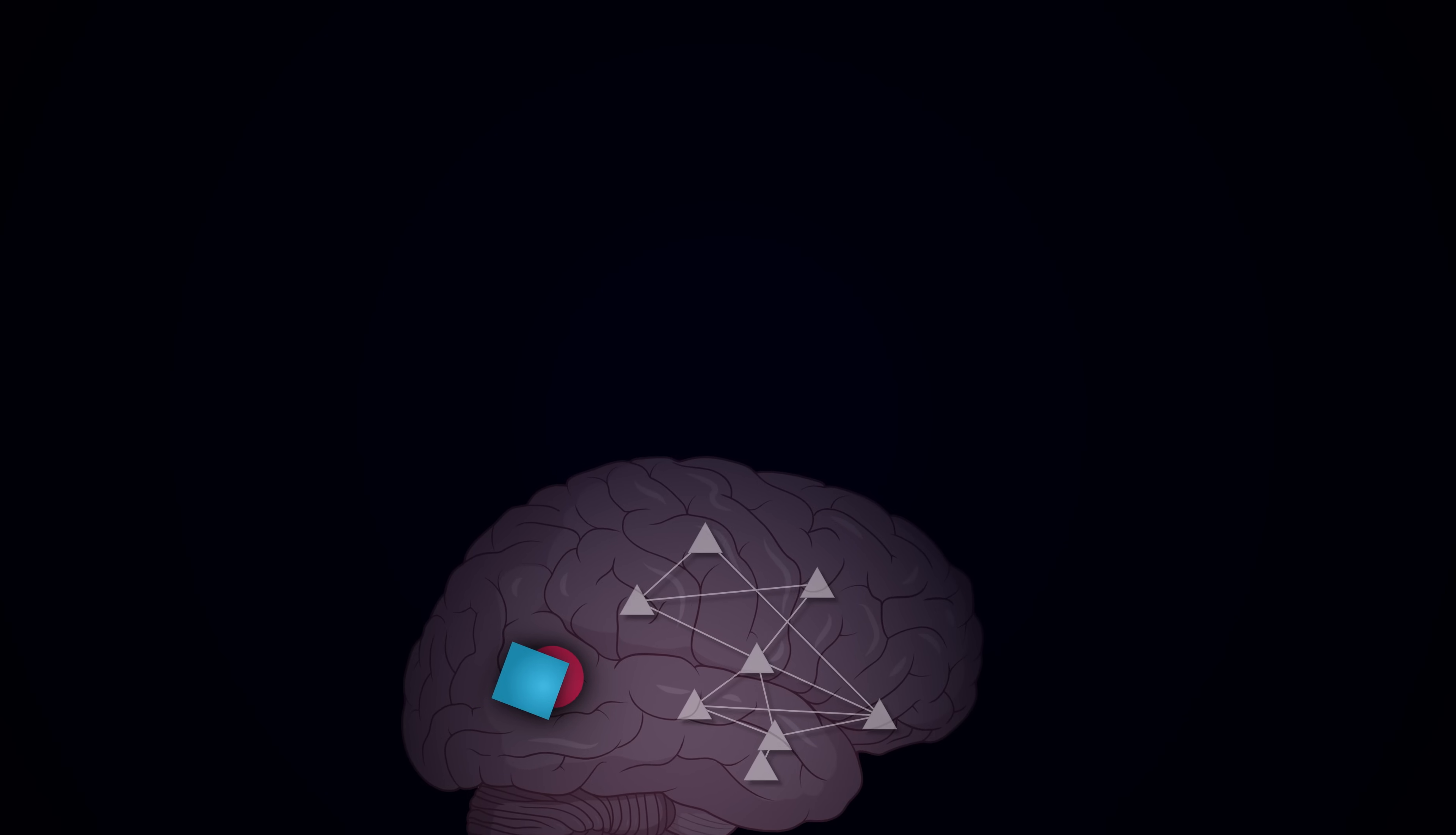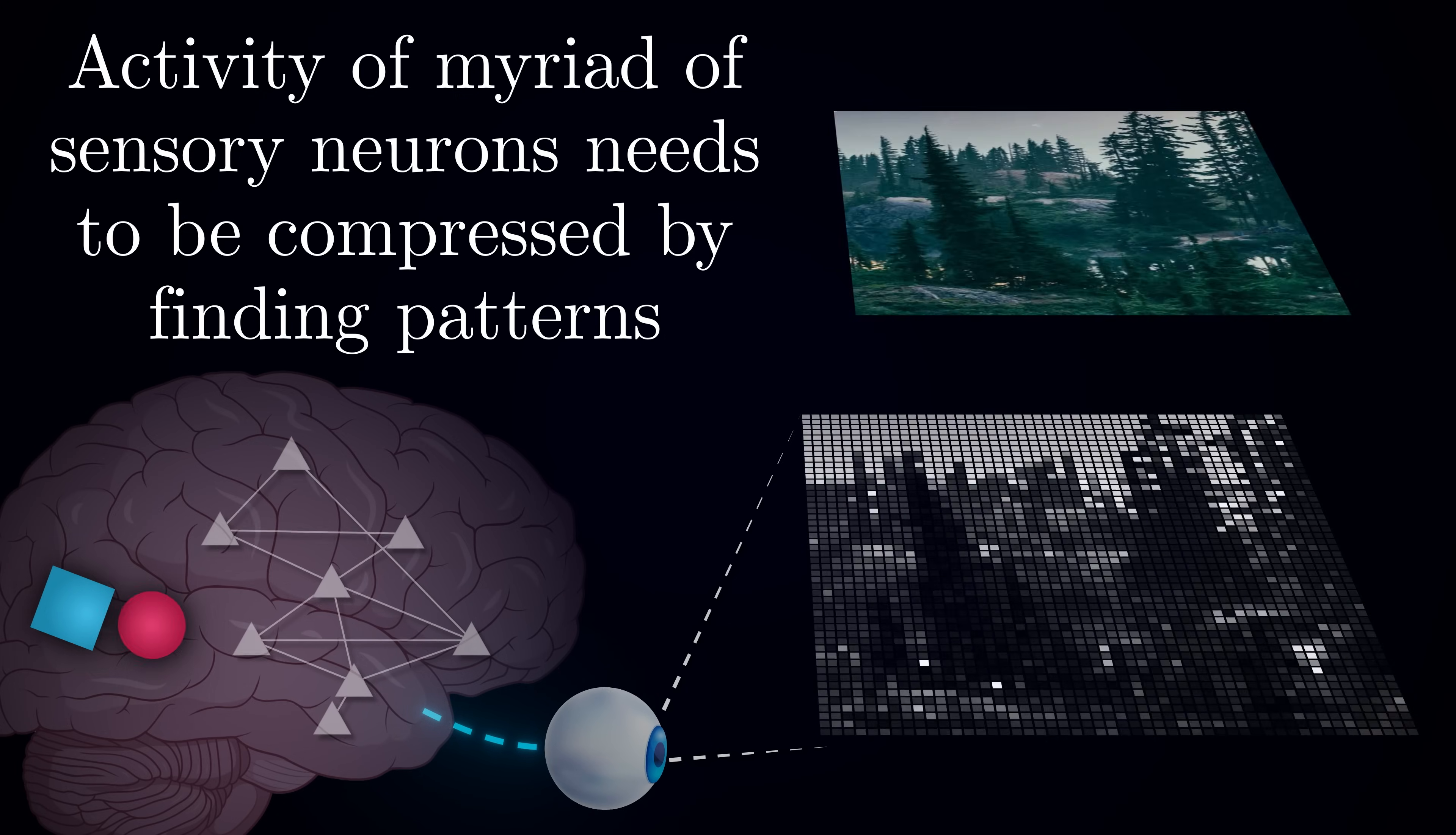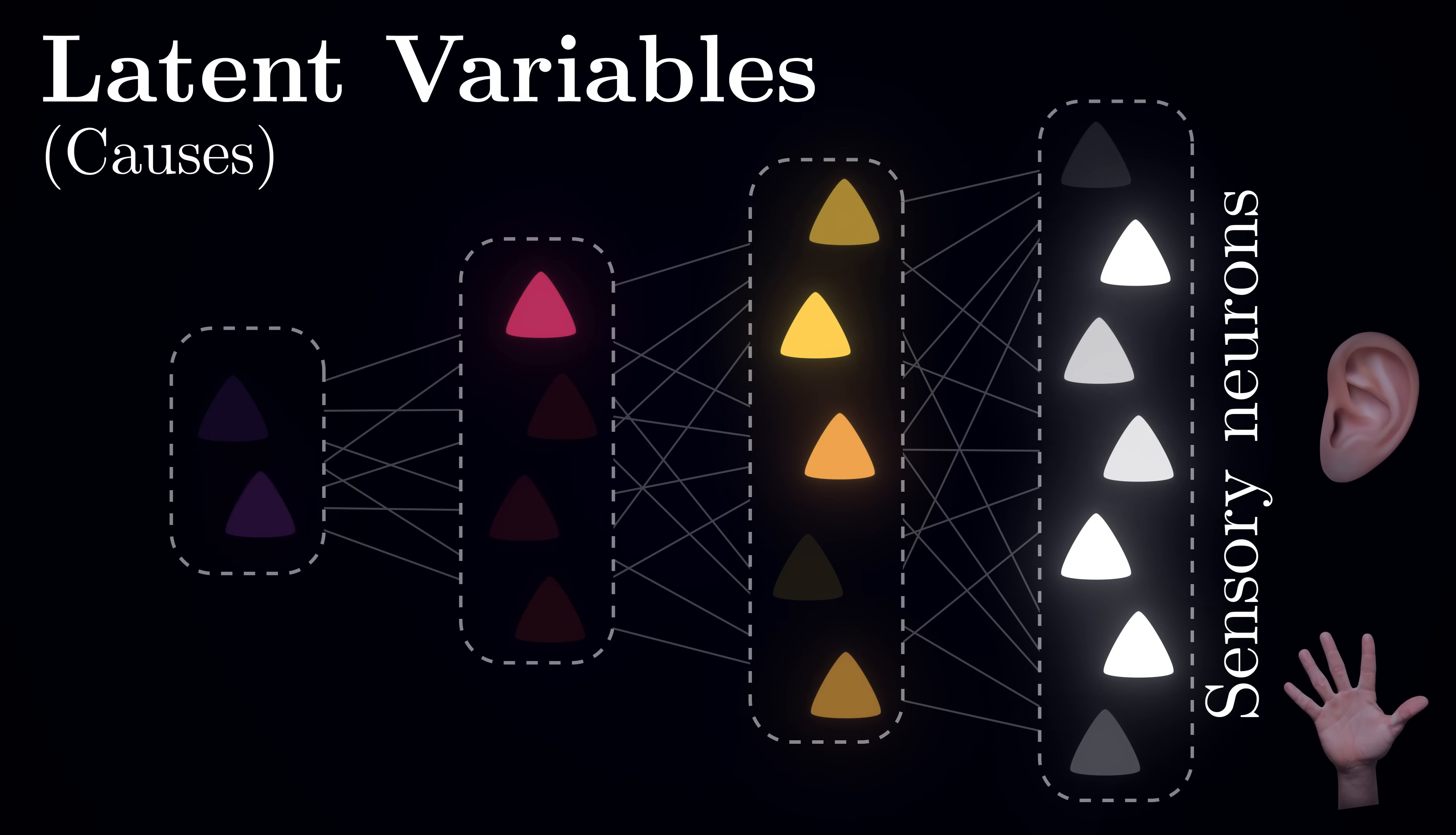But how does the brain actually implement such sophisticated explanations? The key challenge is that sensory data, like the pattern of light on your retina, consists of thousands of neurons firing in complex patterns. The brain needs some way to compress this vast amount of information into a manageable form by finding commonalities and hidden structure in the data. The solution found by evolution was quite elegant. Alongside neurons that directly correspond to sensory inputs, the brain evolved neurons that don't directly connect to the outside world.